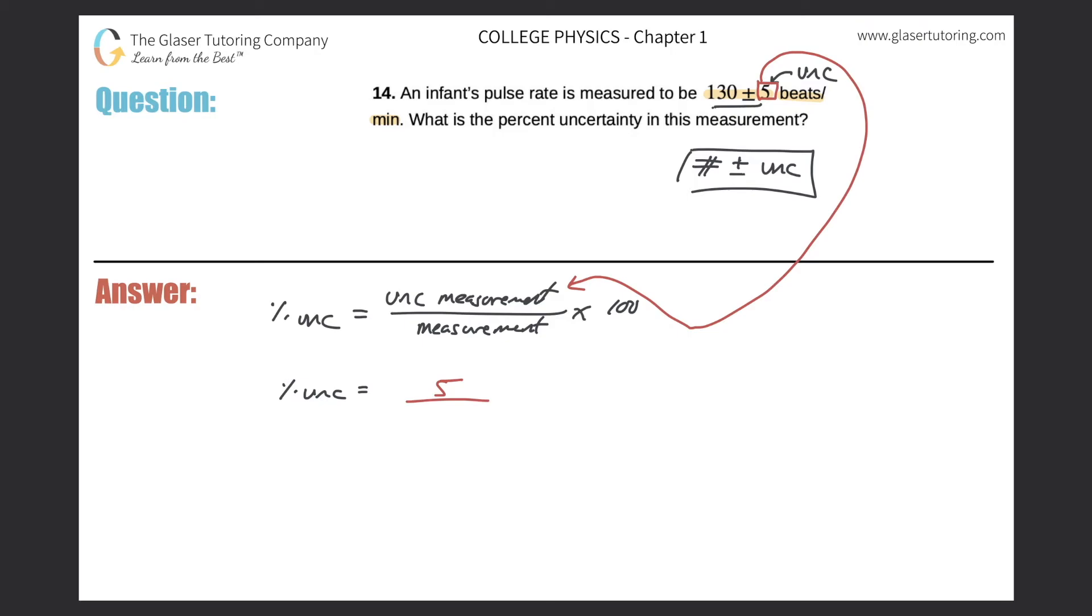So that'll be 5, then divide it by the measurement itself. So the measured rate was 130 beats per minute. So that's now going to be the number that we're going to plug in for the measurement. So 130. And then don't forget to always multiply by 100 when we're talking about a percent.